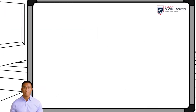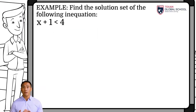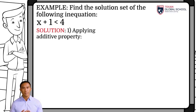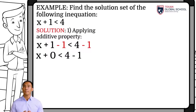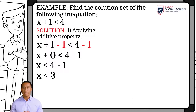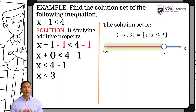Let's look at a first example. We will find the solution set of the following inequation. To isolate the variable x, we will apply the additive property to add the additive inverse of 1, which is negative 1. We apply it to both sides of the inequation to not alter it. Simplifying, results that x is less than 3. Since we are not multiplying by a negative value, the sign of the inequality is not altered. Using interval notation, we can represent the solution set as shown on the blackboard. The solution set represents all those values less than 3, meaning that any value within that interval satisfies the inequality.